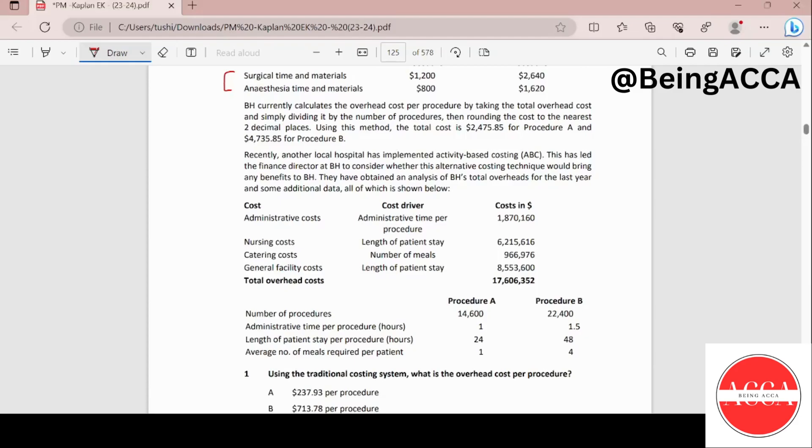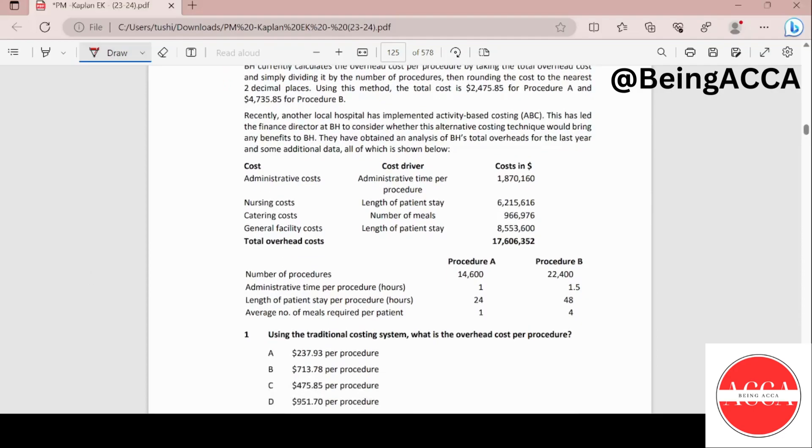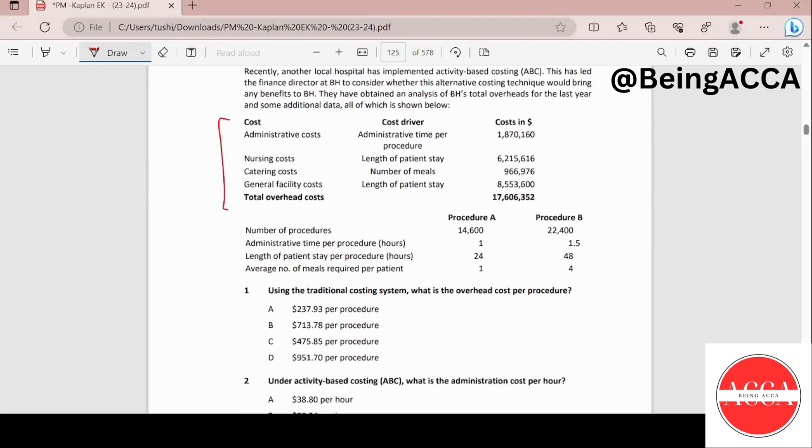Using this method, the total cost is $2475.85 for procedure A and $4735.85 for procedure B. Recently, another local hospital has implemented activity-based costing ABC. This has led the finance director at BH to consider whether this alternative costing technique would bring any benefits to BH. They have obtained an analysis of BH's total overhead costs for the last year and some additional data, all of which is shown below.